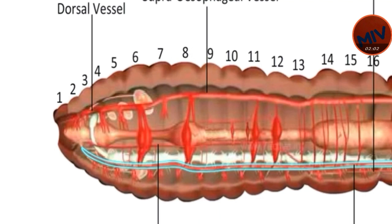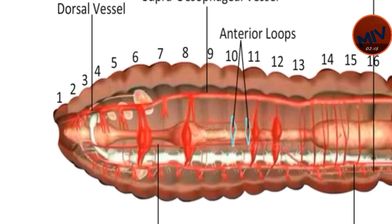Blood flows backward in the ventral vessel. It is present below the gut from the second to the last segment. Two pairs of lateral loops present in each of the 10th and 11th segments help to conduct blood from the lateroesophageal vessel to the supraesophageal vessel.